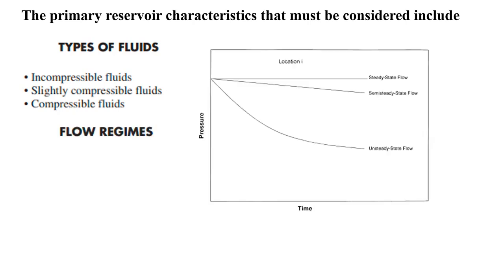Our flow regime: we look at three types. We have the steady state flow regime where the pressure within the reservoir does not change with time — it is constant. Then we have the semi-steady state, also called pseudo-steady state, where the pressure changes with time but the change is constant. So if after five minutes there is a pressure change of 5 PSI, in the next five minutes we also expect that same change of 5 PSI. For an unsteady state, the pressure is not constant and the change is also not constant — if after five minutes we have 5 PSI, in the next five minutes it could be 6 or 7 PSI.